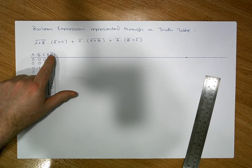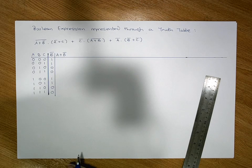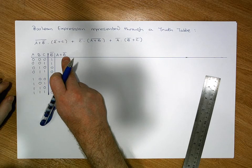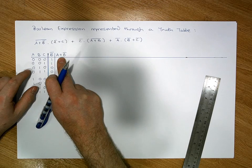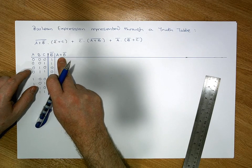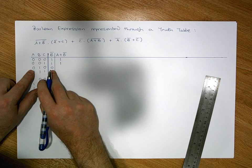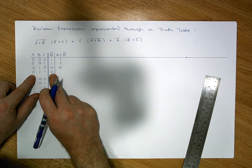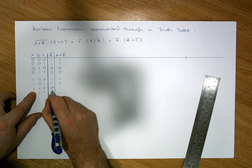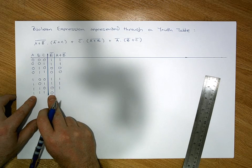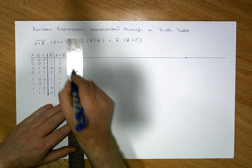Now we take our negated B column and OR it with the A column to give us A OR B̄. An OR only ever gives us zero when both inputs are simultaneously zero. Going down: not simultaneously zero → 1; not simultaneously zero → 1; simultaneously zero → 0; simultaneously zero → 0; not simultaneously zero → 1; 1; 1; not simultaneously zero → 1. That gives us the A ORed with negated B column.